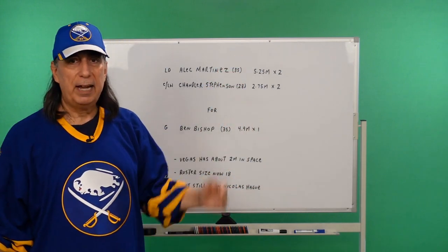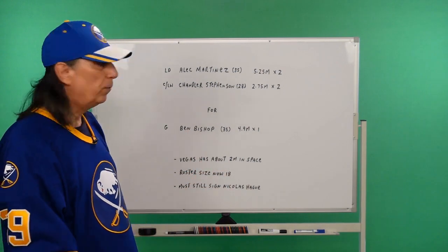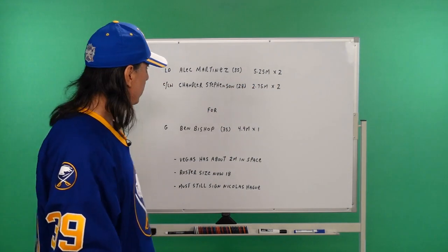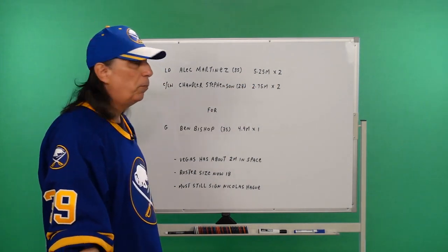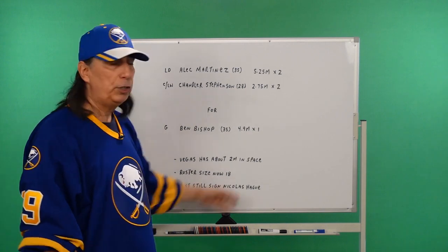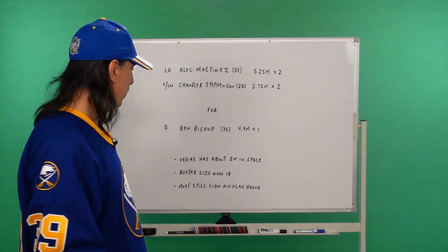And 5.25, we can hack for two years before everything goes crazy with our youngsters. We could hack this. We could manage that. And Chandler Stevenson for 2.75, very friendly, very friendly deal right there for only two more years. Also, we could always trade him out as we move on.